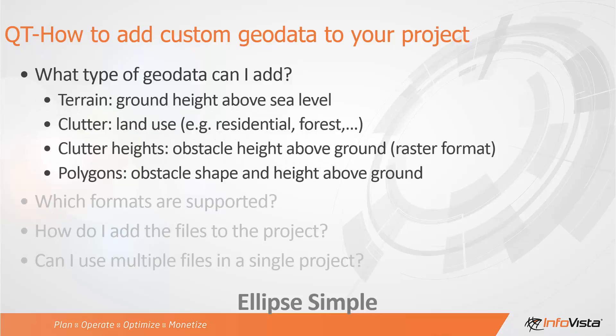So what type of geo data can I add? You can add terrain files — these are raster format files with ground height above sea level for every pixel. You can also add clutter files, which represent the land use for every pixel, for example: residential, forest, water, etc.